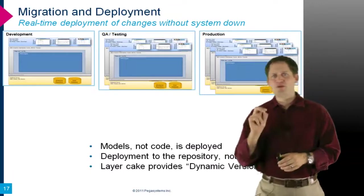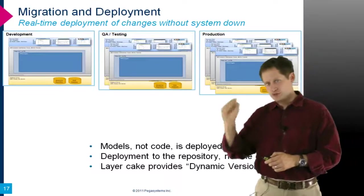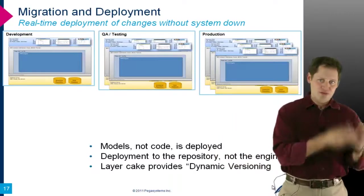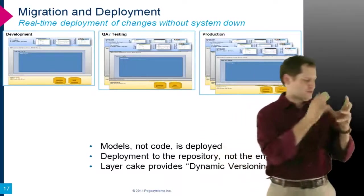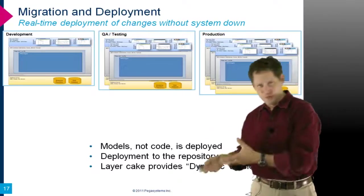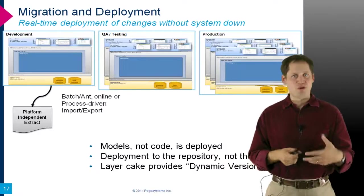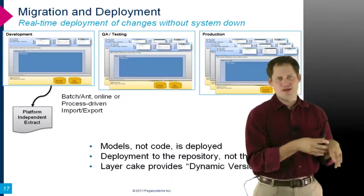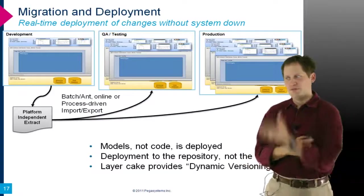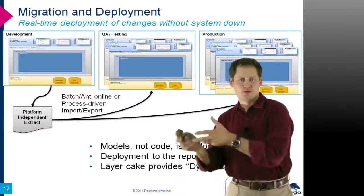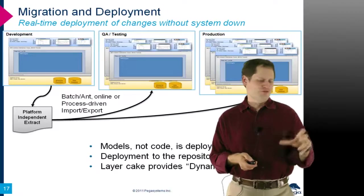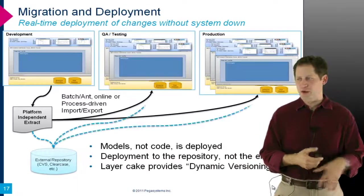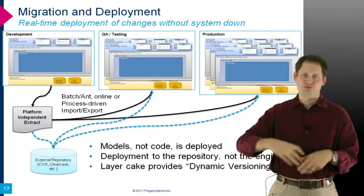From a migration and deployment perspective, PEGA doesn't deploy code — the EAR file doesn't change. Instead, model definitions are moved from development to QA to production repositories. PEGA provides online tools, batch tools, and ANT scripts to extract rules, processes, and screens out of development into a platform-independent format — typically a zip or JAR file — then push them to QA and production environments and load them into those repositories. Customers using centralized source control like Subversion or ClearCase often push that zip or JAR into their versioning repository and use ANT scripts to automate promotion to production.